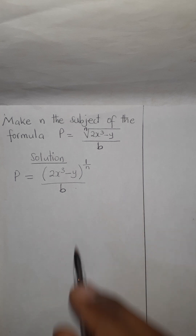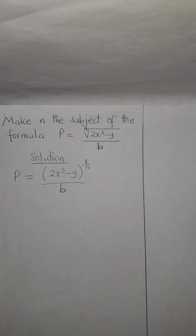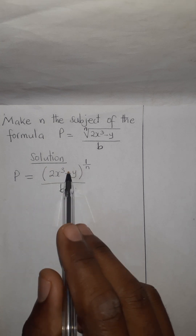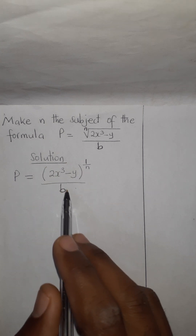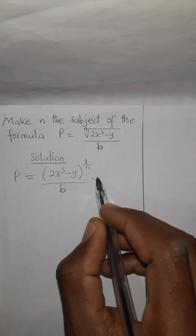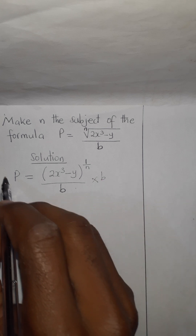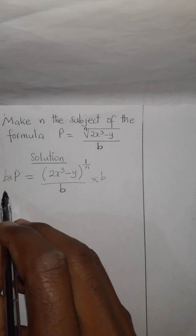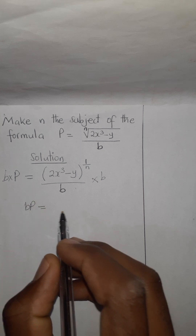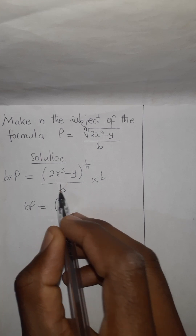After that, we have to find the opposite of the sign which is the easiest sign to remove first. The easiest one is this one. You can see that b is dividing the numerator. Because it's dividing, the opposite of division is multiplication. That means to remove this b, we have to multiply both sides by b. Left-hand side becomes b.